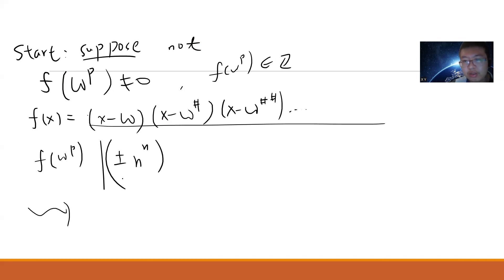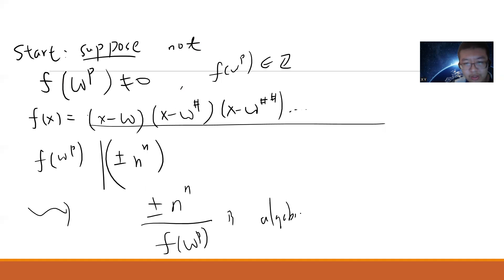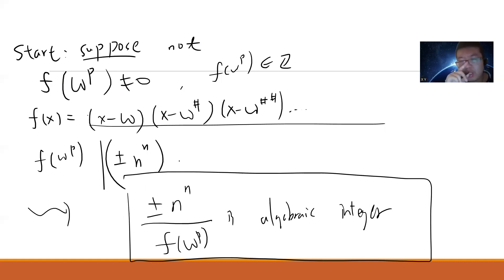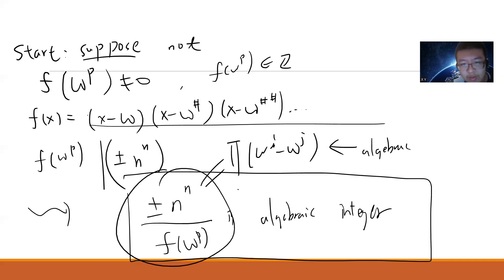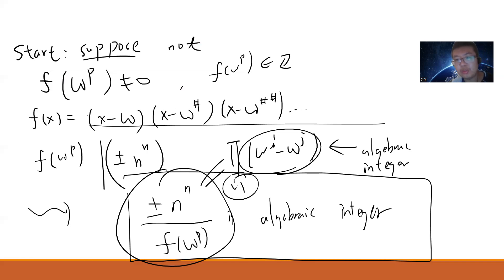This tells us that ±n^n divided by f(ω^p) is an algebraic integer. The reason is that each factor (ω^i − ω^j) is an algebraic integer, and the quotient will be a product of certain remaining factors — each an algebraic integer. Since algebraic integers form a ring, the product is an algebraic integer.